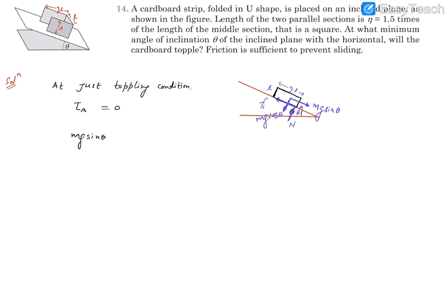Since the shape is symmetrical, the center of mass is at the mid location, so the height is L by 2. The torque of Mg cos theta acts at a horizontal distance x from point A, where x is the distance of the center of mass from this edge. The torque balance gives: Mg sin theta times L by 2 equals Mg cos theta times x.